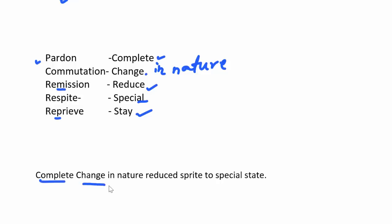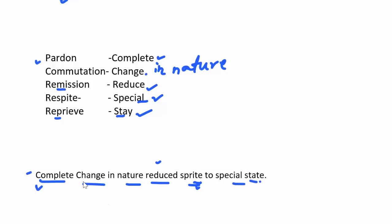The mnemonic sentence is: complete change in nature, reduced sprite to spatial state. For complete, understand it is for pardon — a convict is completely absolved from the sentence and conviction. Change in nature is commutation — there is a change in the nature of the sentence. Remission means reduce — simply the sentence is reduced with no change in nature. For respite, I have jumbled the word to make sprite, and written special to remember that respite means reduction due to some special facts. From state, you can remember the word stay for reprieve. So just remember: complete change in nature which reduces the cold drink sprite to a spatial state.